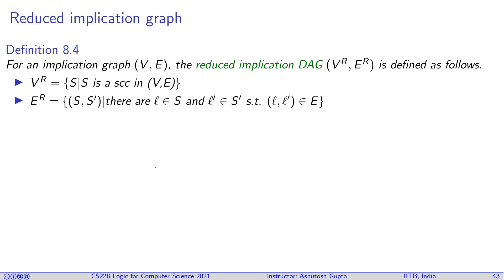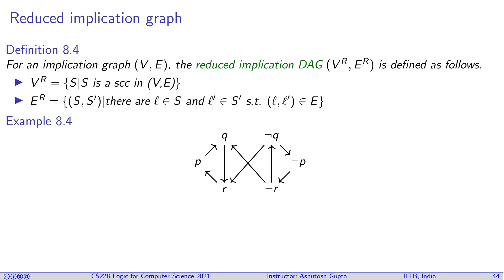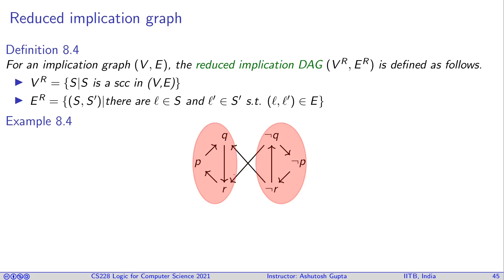The reduced graph is the graph whose nodes are the SCCs, with an edge between two SCCs if there is an edge between their literals. For example, if there are two SCCs in our graph with an edge between them, the two-node reduced graph captures this structure. We assign zeros and ones to entire SCCs.